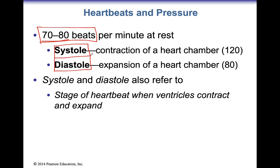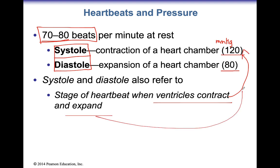Systole and diastole represents the highest pressure and the low pressure in the heart chambers. When the ventricles contract, they push blood out of the aorta at approximately 120 mmHg — millimeters of mercury, which is the unit we use to measure blood pressure. When the heart relaxes and the ventricles are expanding and filling with blood, the pressure drops down to about 80. So 120 over 80 is an average blood pressure, and you can have a range from 110 to about 140 that's still considered healthy. Systole is when the ventricles are contracting — that's the 120 — and diastole is when they're expanding — that's your 80.